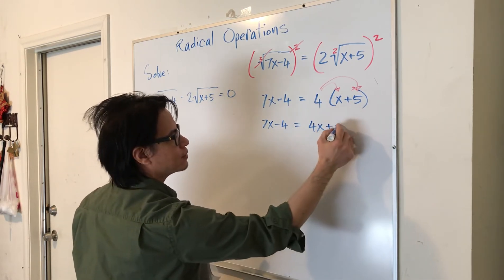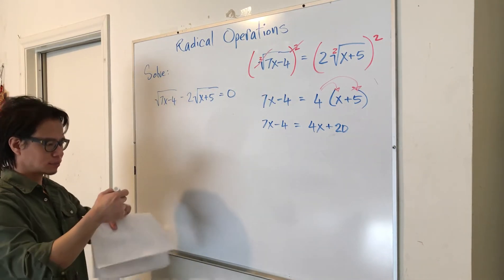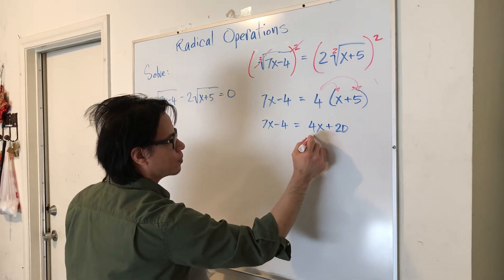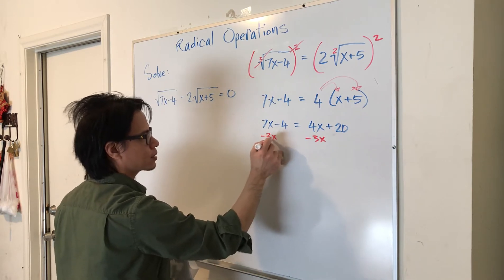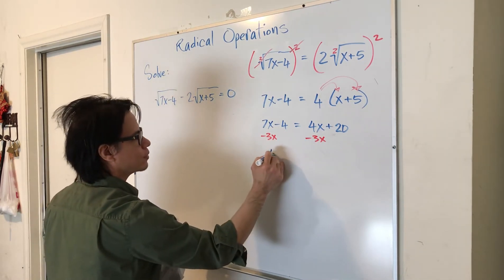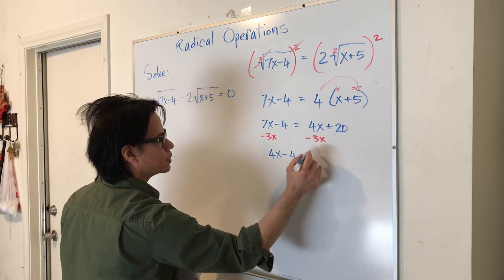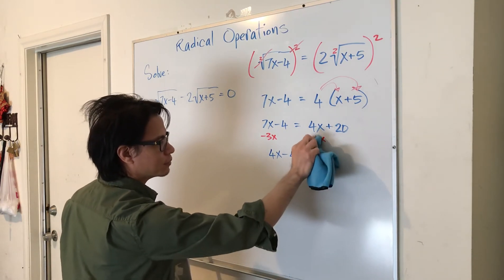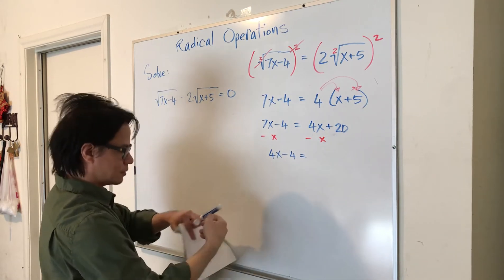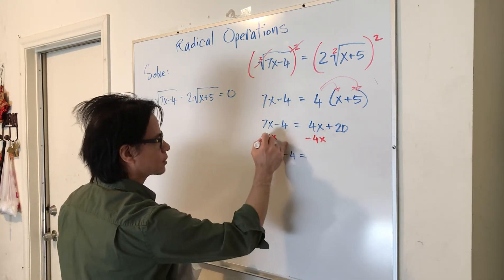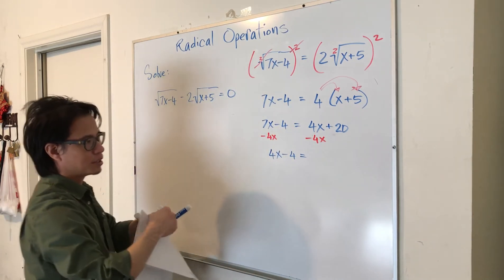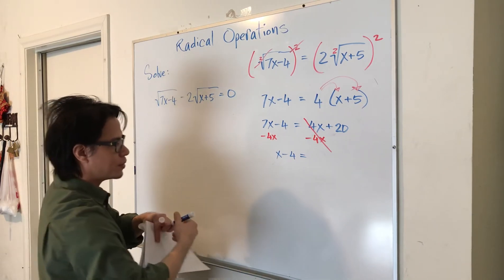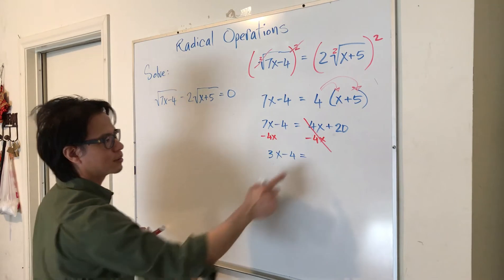We're getting there. Let's get the X on left, so minus 3X minus 3X. You have 4X minus 4 is equal to, you need to subtract 4X to get rid of it right, so let's subtract 4X instead of 3X here, because we want to get rid of this term.